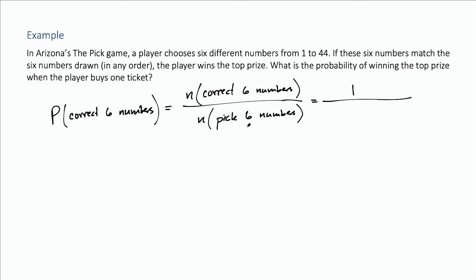For our denominator, we want to know how many ways can I just pick six numbers from 1 to 44, and that's a combination. That's 44 choose 6.